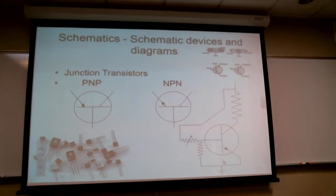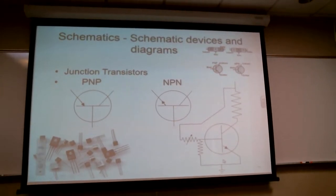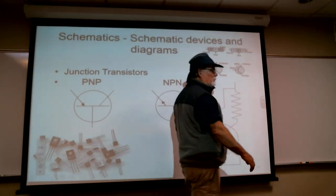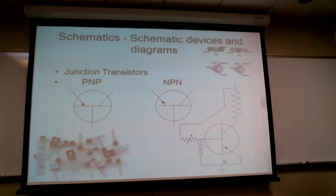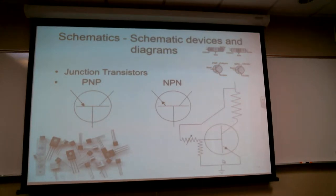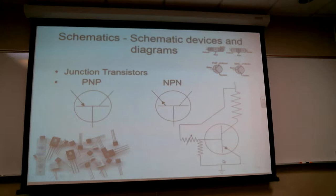Last week we had the conversation about doping silicon — getting one side of the silicon to have a bunch of atoms that will let go of an electron, and another side doped with atoms that would like an extra electron. If you put them together, the electrons will jump.